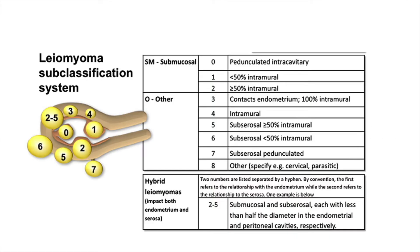Coming to the FIGO classification of leiomyoma or fibroids: SM means submucosal, and O means others. In the submucosal category there are three types — 0 means pedunculated intracavitary, 1 means less than 50% intramural, and 2 means greater than or equal to 50% intramural.